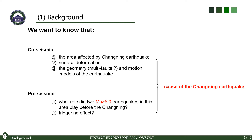For this earthquake, we want to know the following information. In the co-seismic part, we want to know the area affected by the Changlin earthquake, the surface deformation of the earthquake, and the geometry and motion models of the earthquake. In the pre-seismic part, we want to know what role P1 and P2 played before the Changlin event, to analyze the cause of the Changlin earthquake.